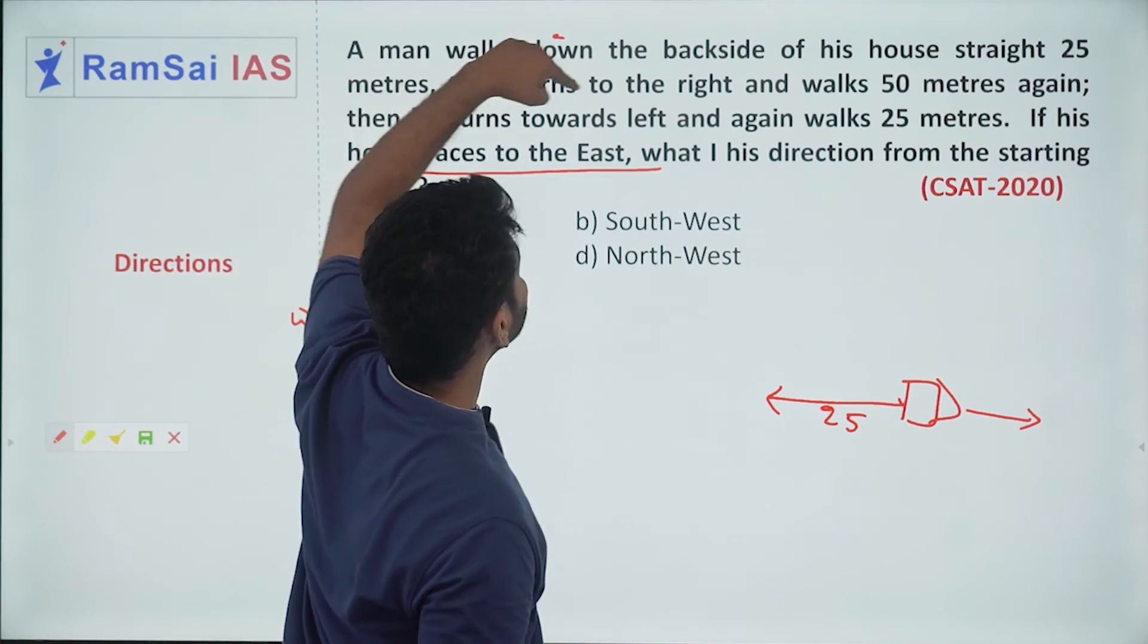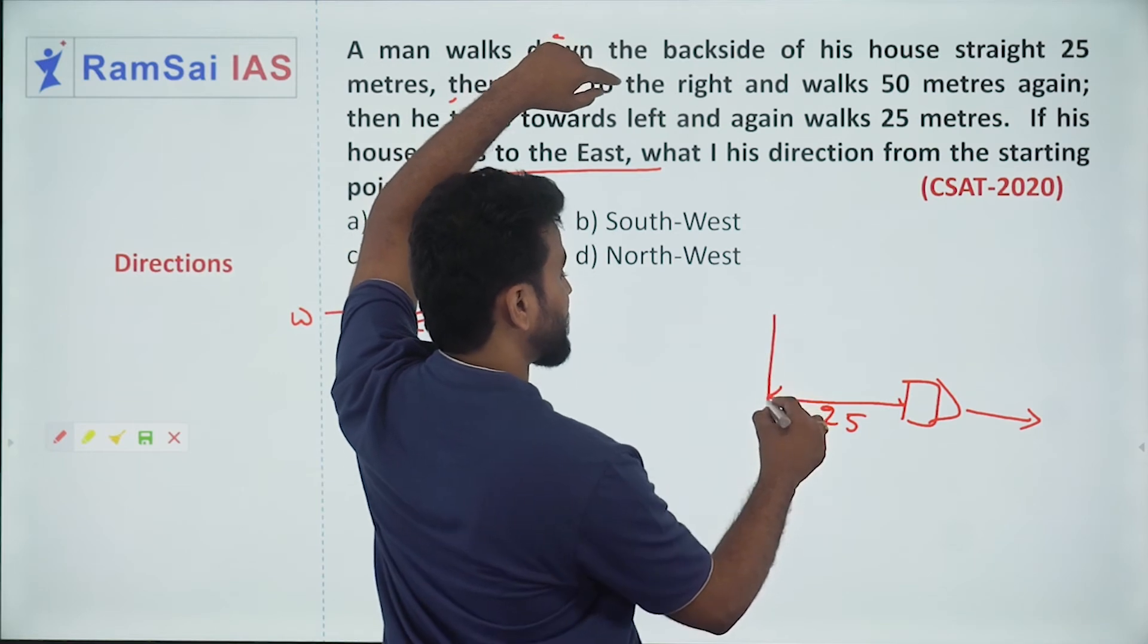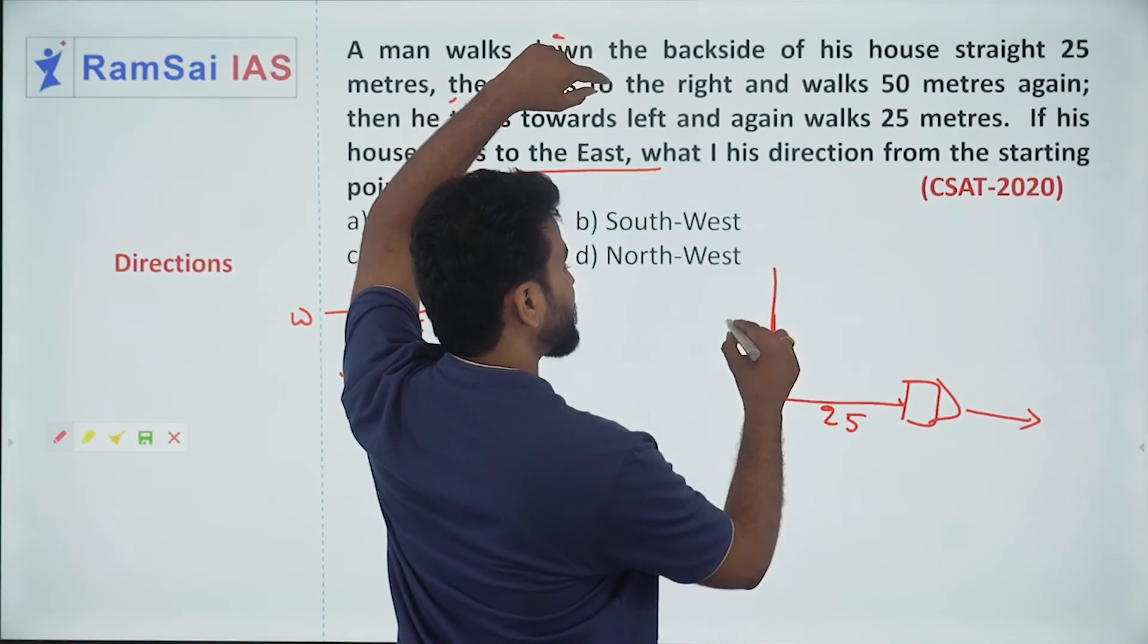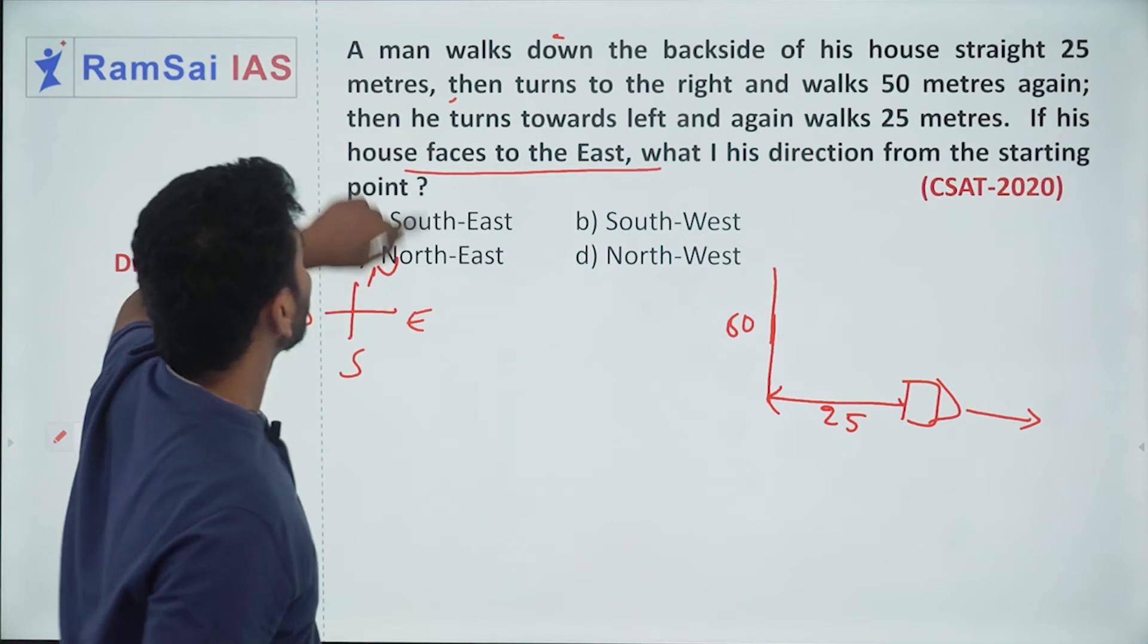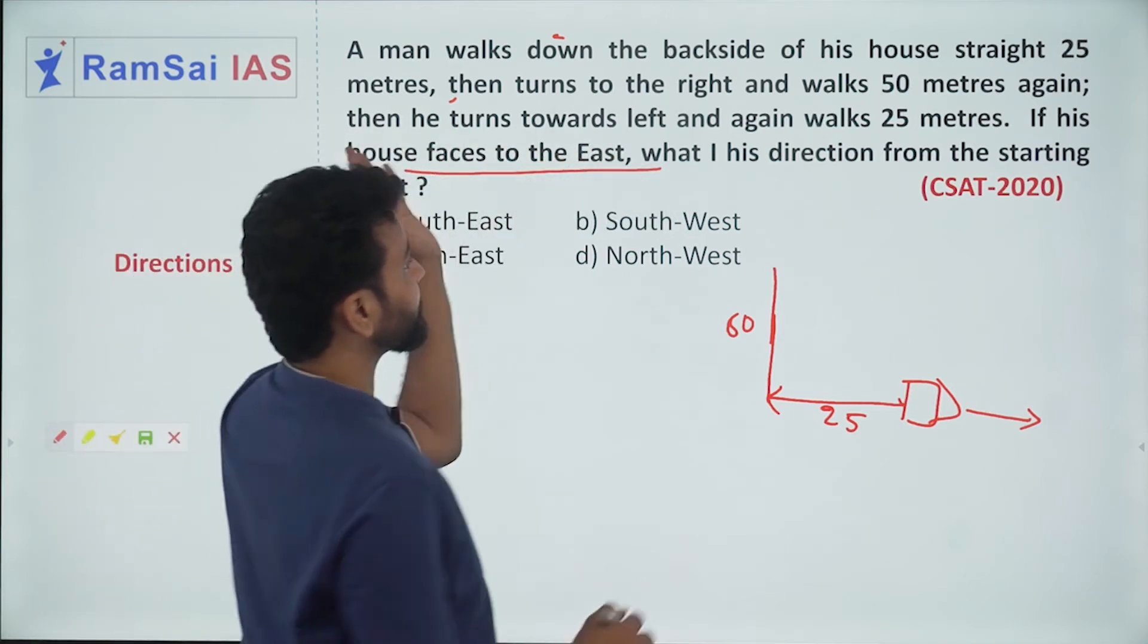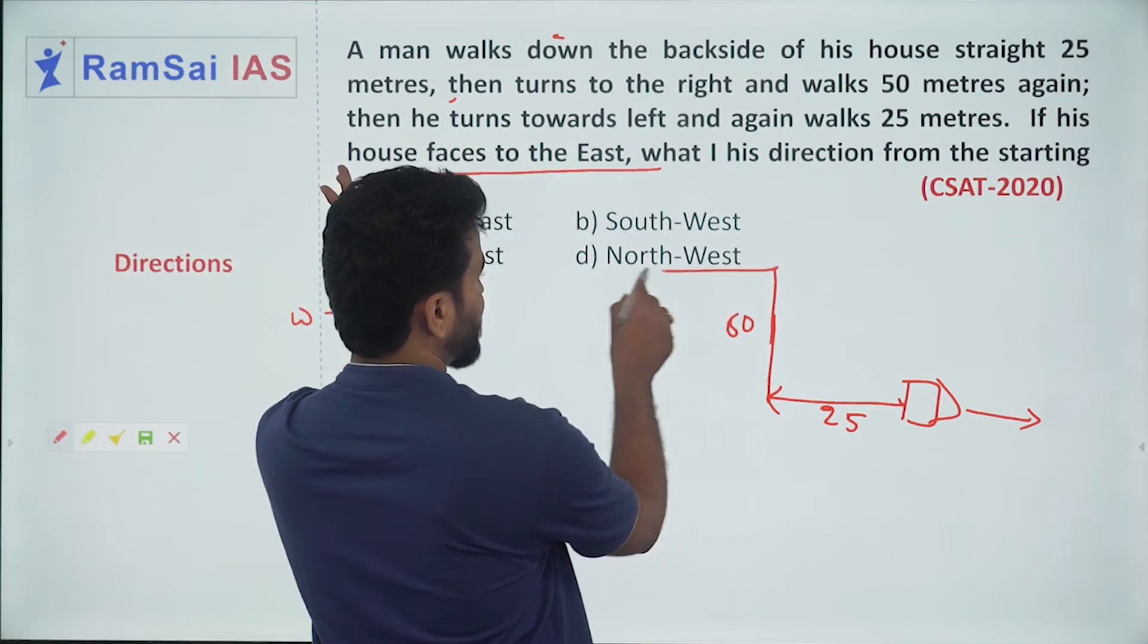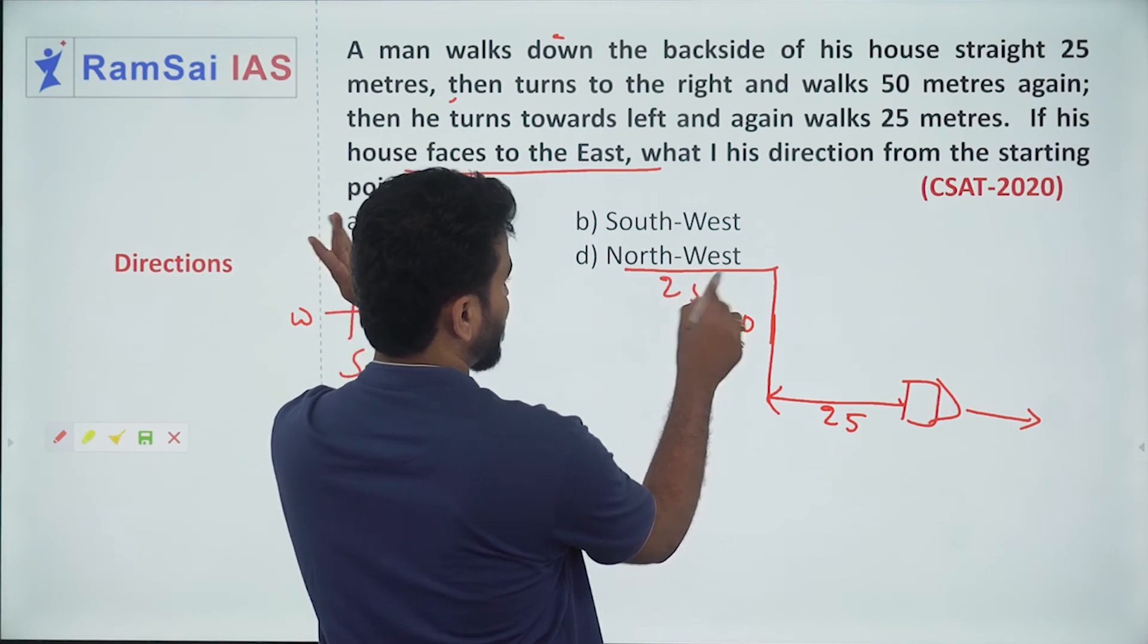Then turns to his right and walks 50 meters. Then he turns towards left and again walks 25 meters.